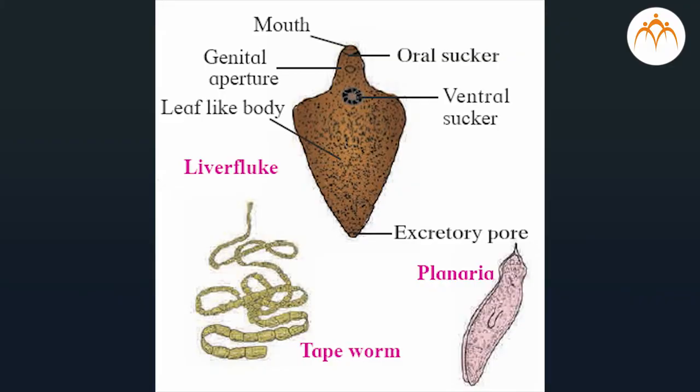Phylum Platyhelminthes: the body of these animals is slender and flat like a leaf or strip; hence they are called flatworms. Most are endoparasites, with few free-living and aquatic. The body is acoelomate and bilaterally symmetrical. These are triploblastic — their body is made up of three germ layers: endoderm, ectoderm, and mesoderm. These animals are hermaphrodite, meaning male and female reproductive systems are present in the same body. Examples: Planaria, liver fluke, tapeworm.